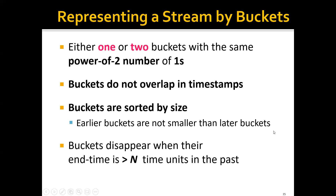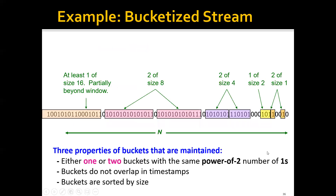Buckets can disappear when the end time — the right margin of the bucket — is more than n units before the current time, so the bucket will disappear. Let's look at a concrete example. Let's say we have this data stream and we already split it into several buckets. Now let's check these three properties of the buckets. The first property is that either one or two buckets with the same power-of-two number of ones.